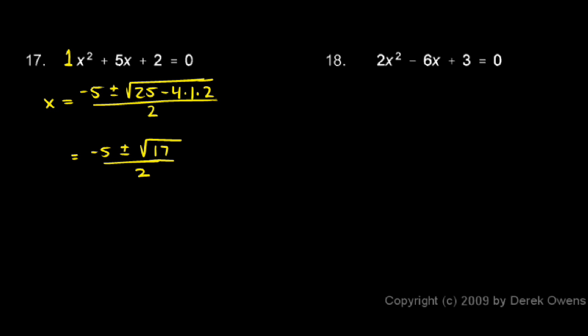If we needed to, we could get a decimal approximation for these two numbers, but we'll just leave it as this. These are the exact answers. Negative 5 plus or minus the square root of 17 over 2.